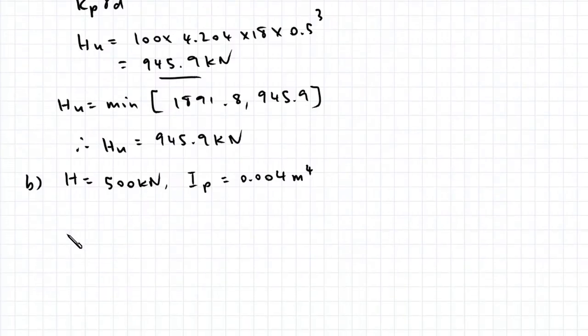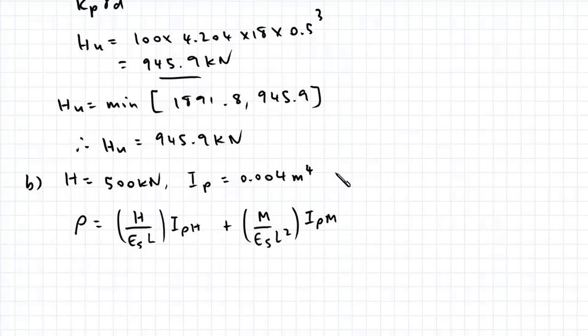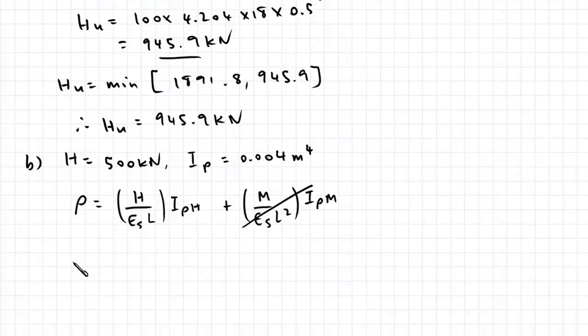The equation for displacement for a free head pile in cohesionless soil is given by this equation here: H on ESL multiplied by an I factor IPH, plus M over ESL squared multiplied by an I factor IPM. Now because there's no moment applied to the top of the pile, we don't have to worry about this term.